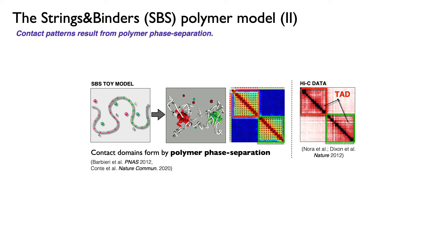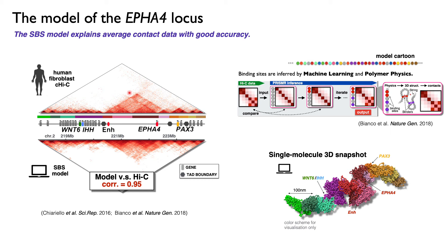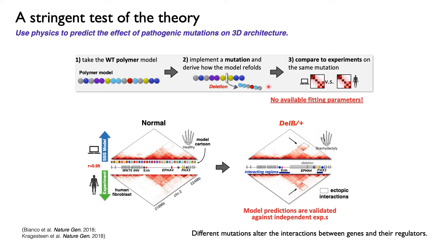This is not just theoretical speculation — with this model we can explain experiments with good accuracy. Here you can see the contact matrix of a genomic region around a gene called FIT4, a well-known and important gene because mutations of this gene have been linked to congenital disorders and pathogenic phenotypes. The experimental contact matrix has complex patterns of interactions which are faithfully recapitulated by our model. To explain these complex contacts we need a more sophisticated polymer model with more than two colors, and we infer this polymer model by combining machine learning and polymer physics.